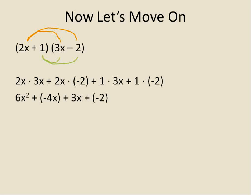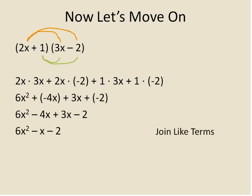When we do that, we join together our multiplication: 2 times 3 is 6, x times x is x squared; 2 times negative 2 is negative 4x; 1 times 3x is 3x; 1 times negative 2 is negative 2. For the final answer, we simplify the signs and then join any like terms. We have negative 4x and positive 3x — those are like terms — so negative 4 plus 3 gives us negative 1x, written as negative x.